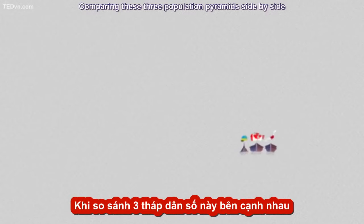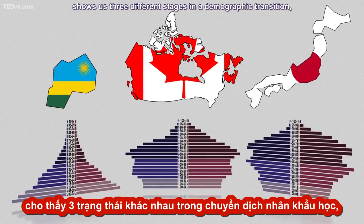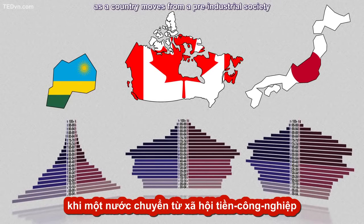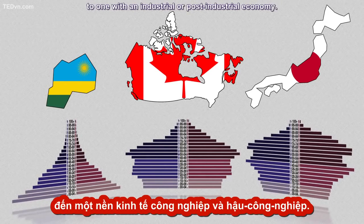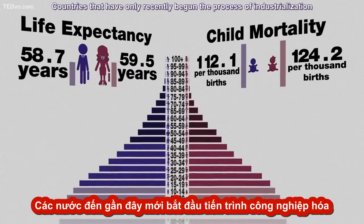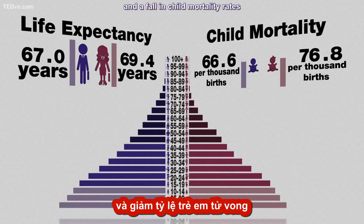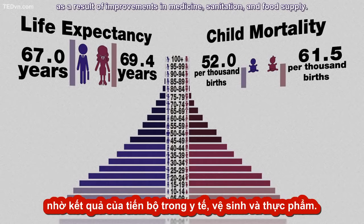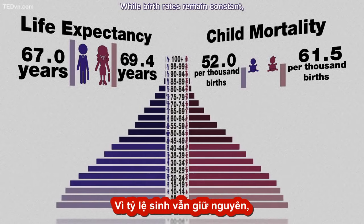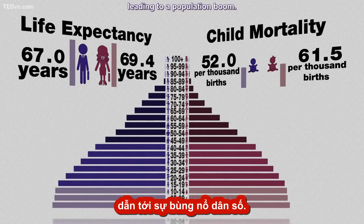Comparing these three population pyramids side by side shows us three different stages in the demographic transition, as a country moves from a pre-industrial society to one with an industrial or post-industrial economy. Countries that have only recently begun the process of industrialization typically see an increase in life expectancy and a fall in child mortality rates as a result of improvements in medicine, sanitation, and food supply, while birth rates remain constant, leading to a population boom.